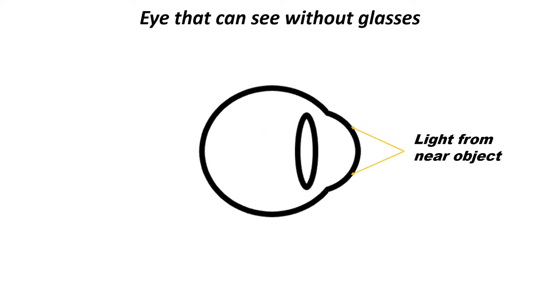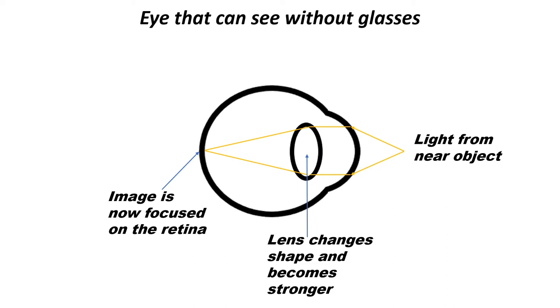When you are looking at a near object such as a book or iPad screen, because this is much closer to you, the lens will not be able to focus the light onto the retina in its weakest state. So the eye applies extra focusing effort, which makes the lens change shape and get more powerful. Now the light is focused onto the retina and you can see the near object clearly.